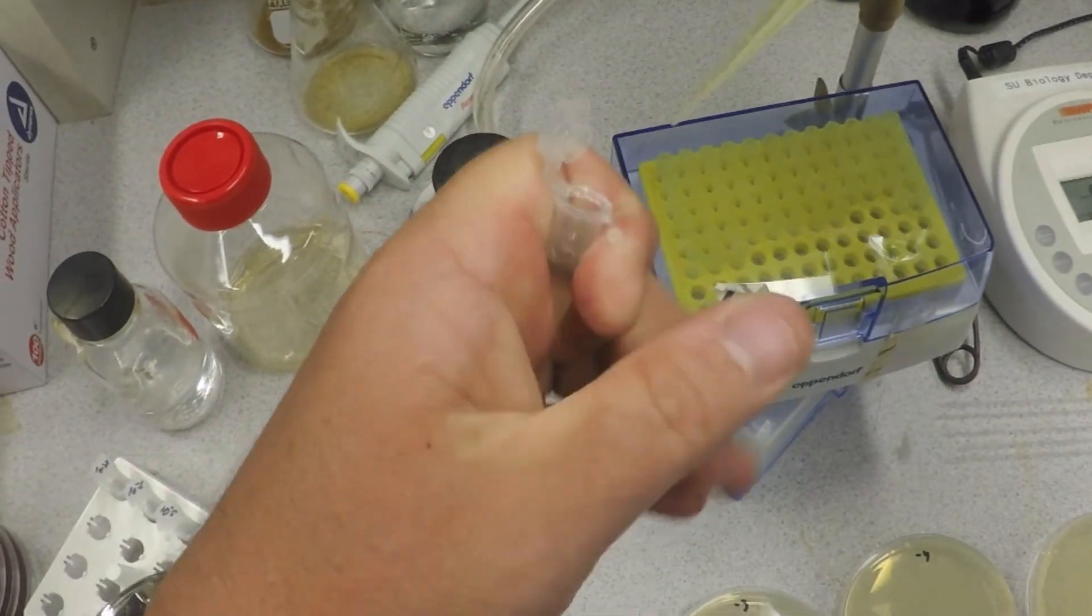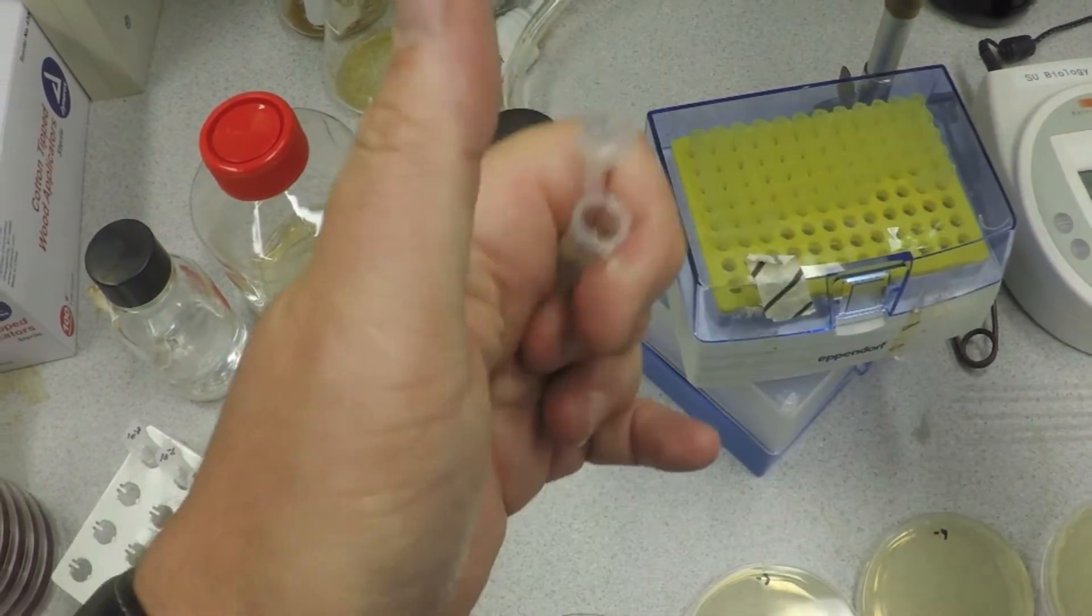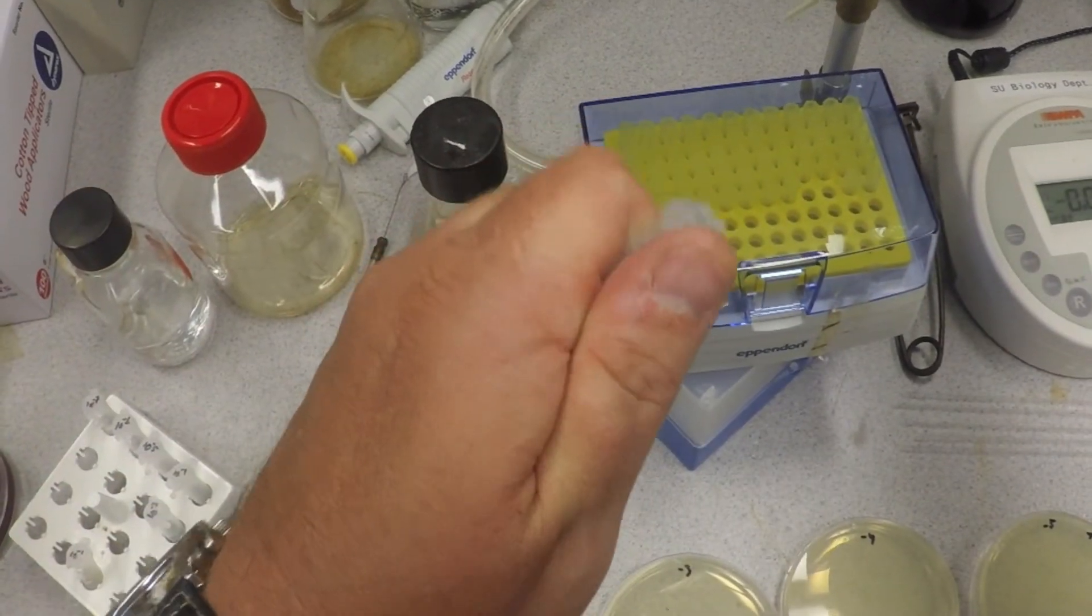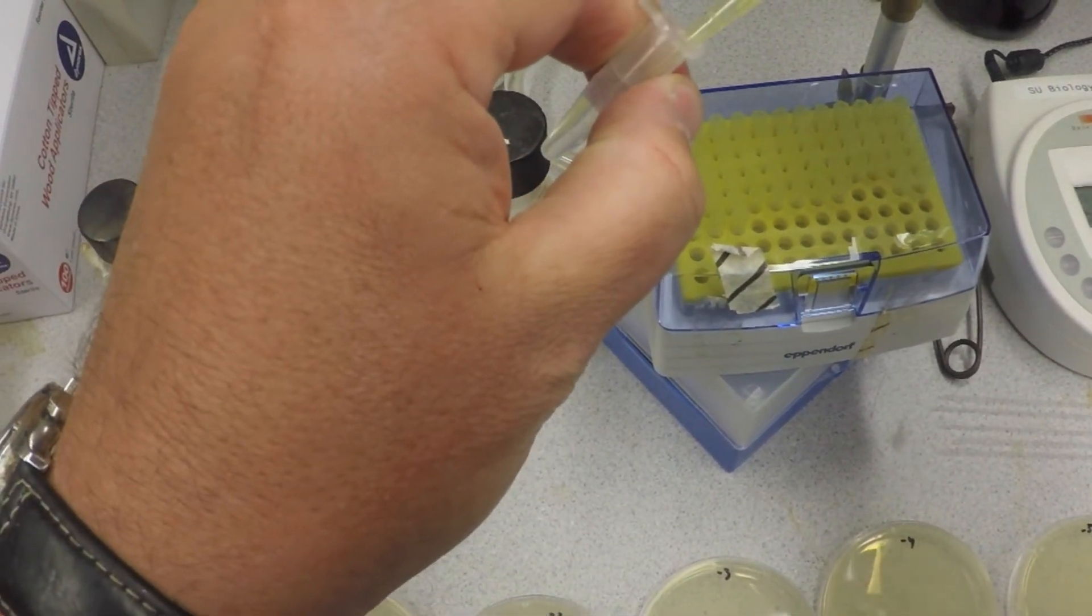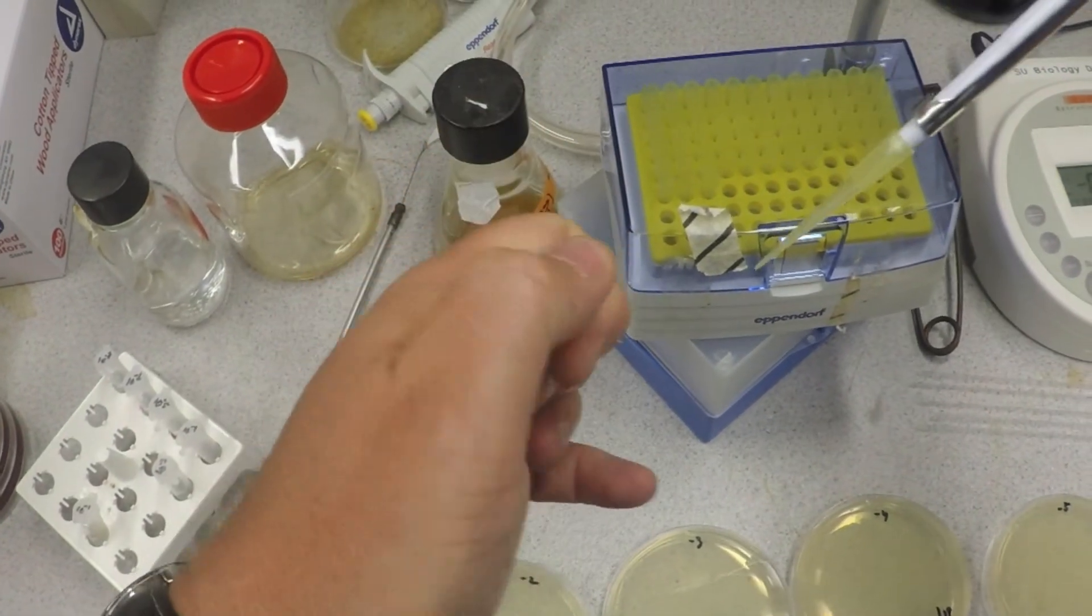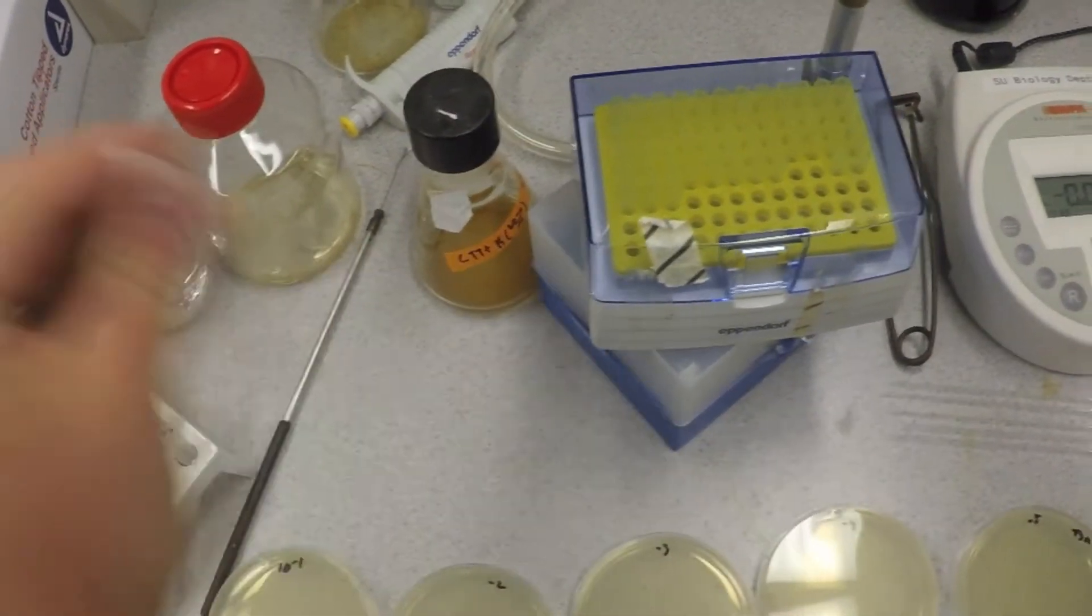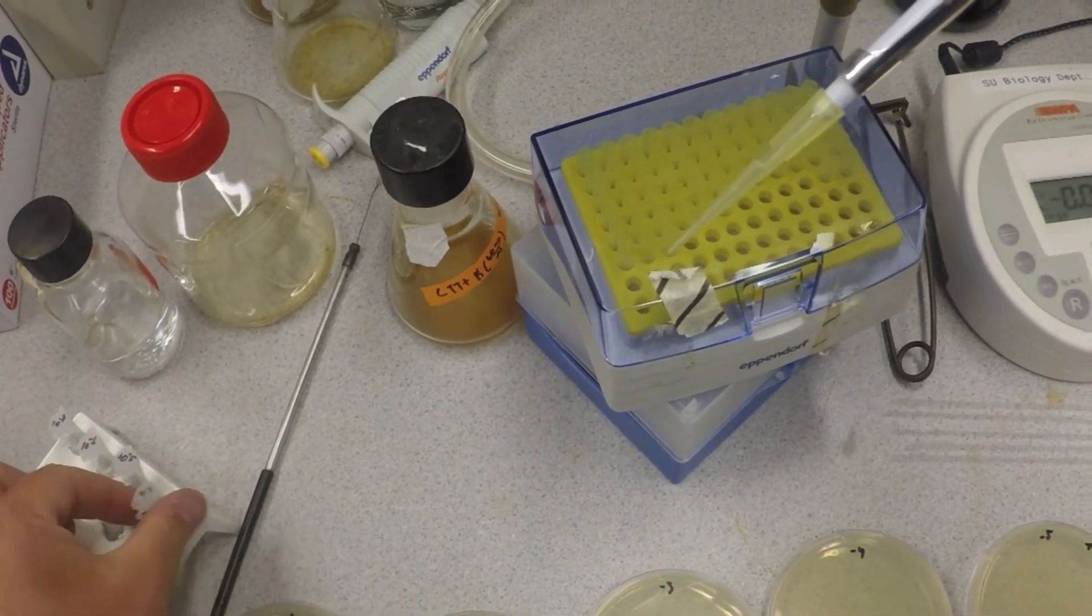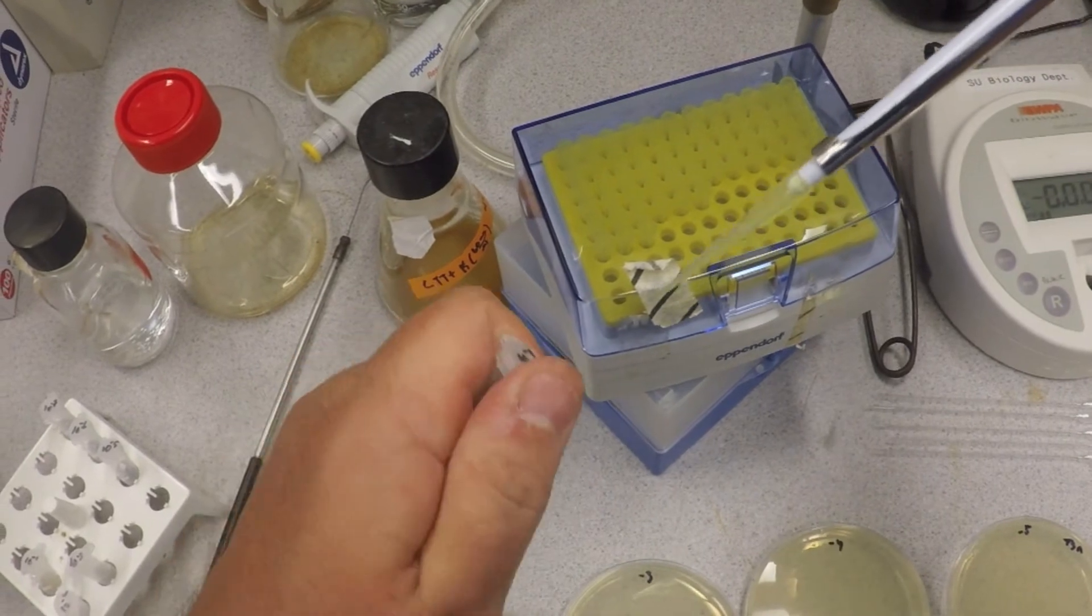We take 100 microliters this time from here and put it into the 10 to the minus 2, or the 1 to 100 tube. Pipette a few times like before, get rid of the tip, shake it up a little bit, and you do this until you have all of your dilutions set up. We'll come back when that's done.